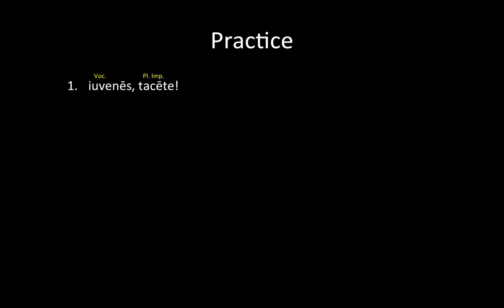Let's do a little bit of practice — pause the video, copy this down, and mark it up and translate it. 'Iuvenes, tacete.' 'Iuvenes' is vocative plural, so we're addressing multiple young men. 'Tacete' is a plural imperative — we know because it's the infinitive with -re replaced by -te. So: 'Young men, be quiet.'